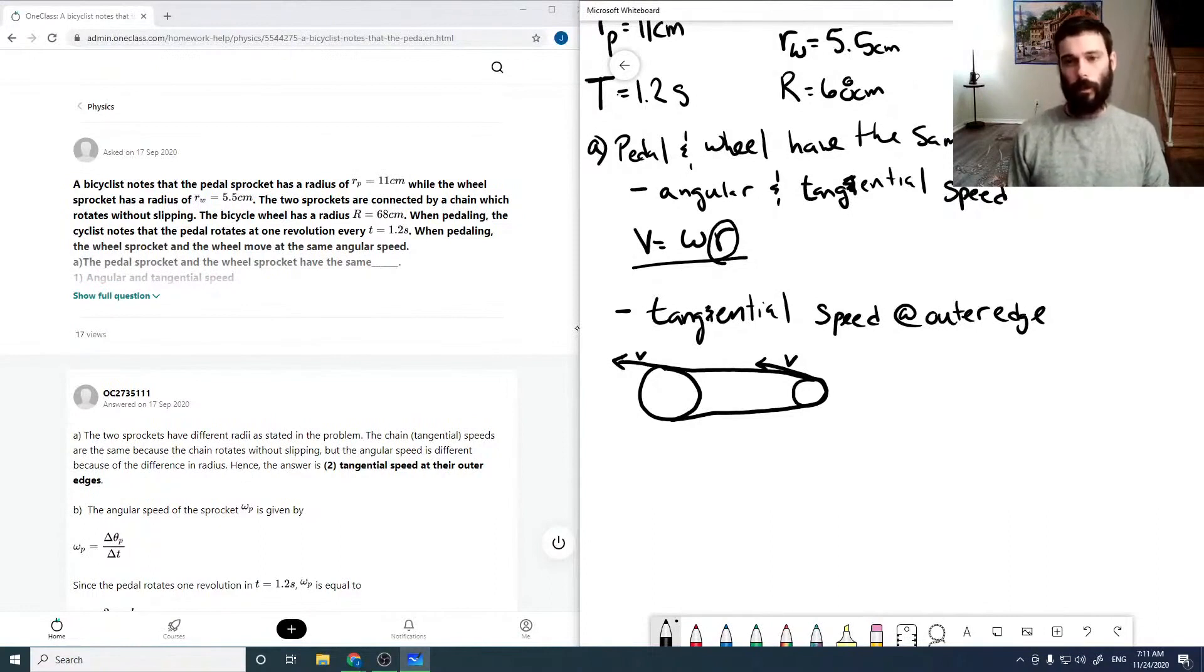So, they're being pulled at exactly the same tangential speed, because they're being pulled by the same chain. So this one is correct, and just to continue through the other ones to rationalize why they're incorrect.